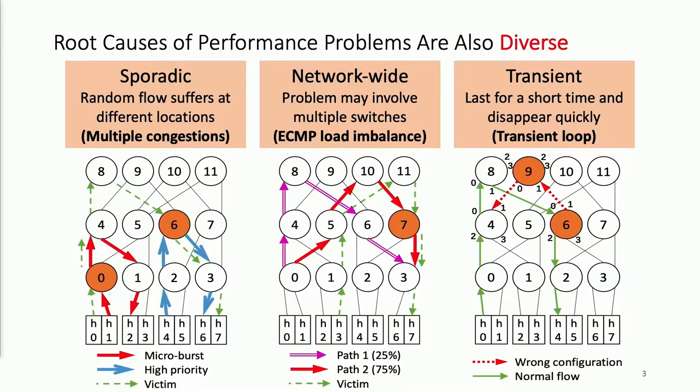To show the problems can be network-wide, the ECMP load balancing can lead to congestion at HOP7, but the actual problematic switch is switch zero, which sends the traffic imbalancedly.